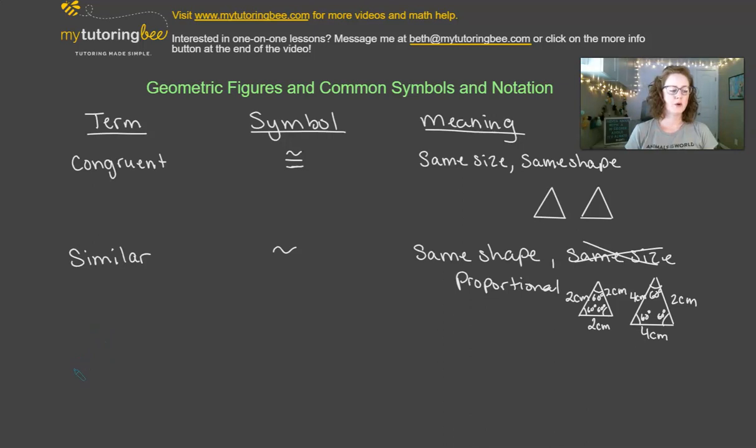And the last term that we're going to talk about is approximately. So this symbol is kind of like a squiggly equal sign, so you can see how similar and different all of these different symbols are.